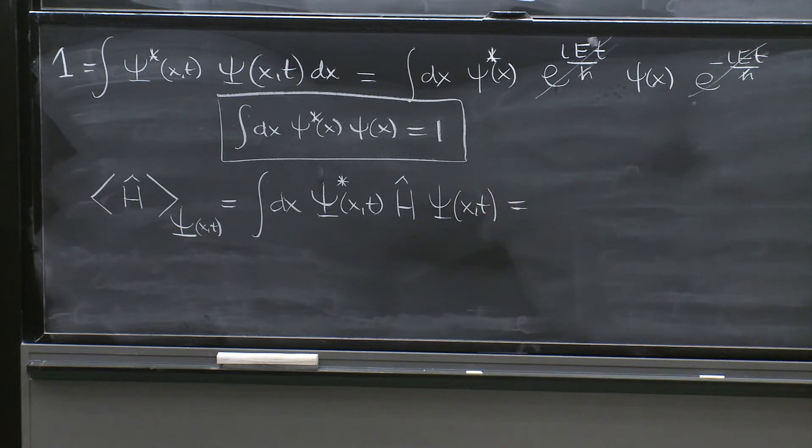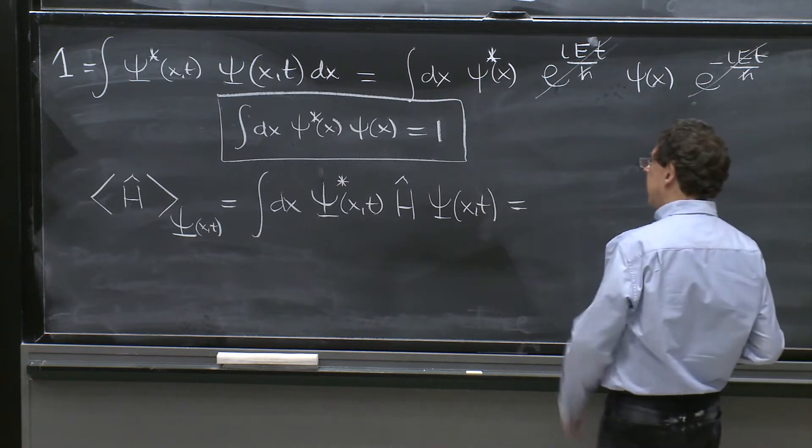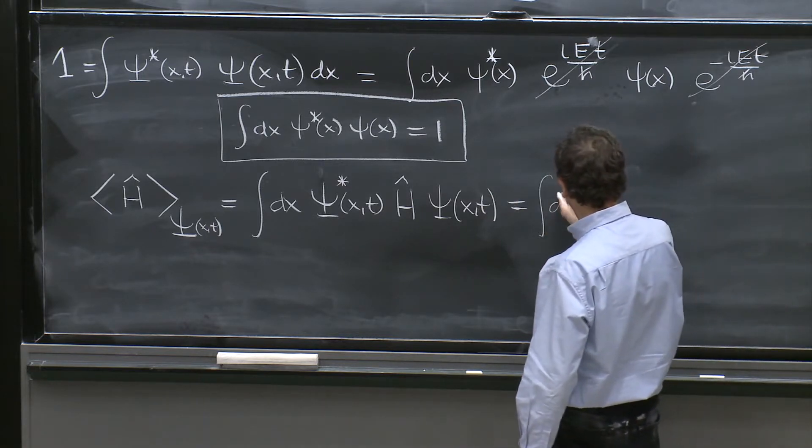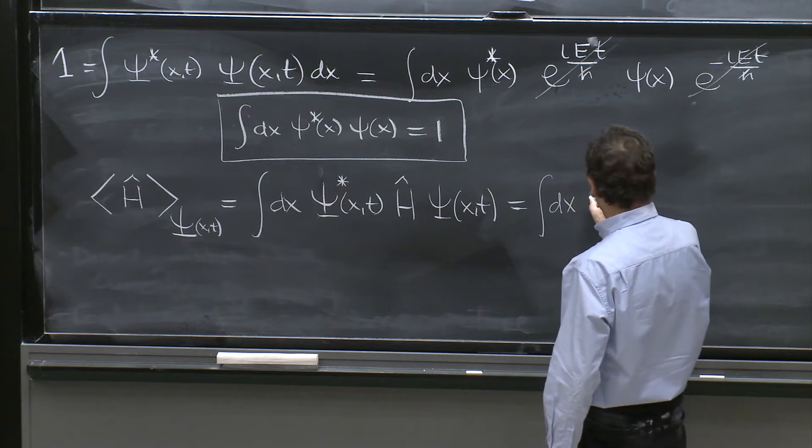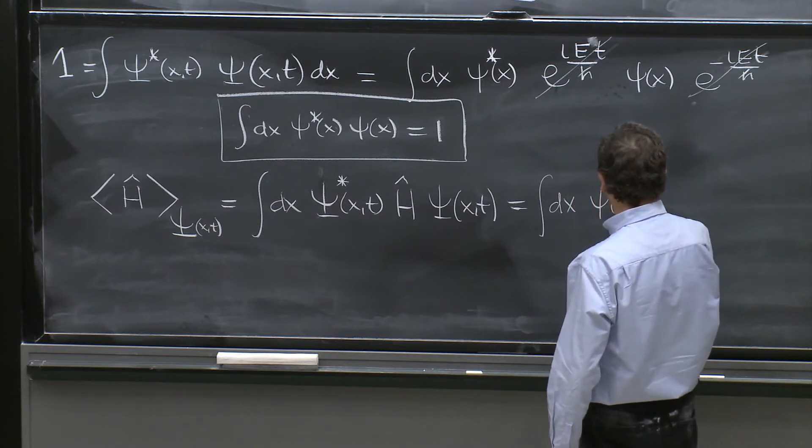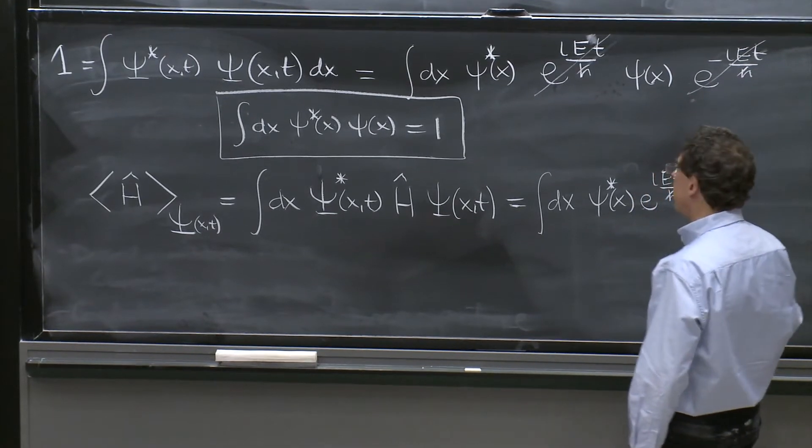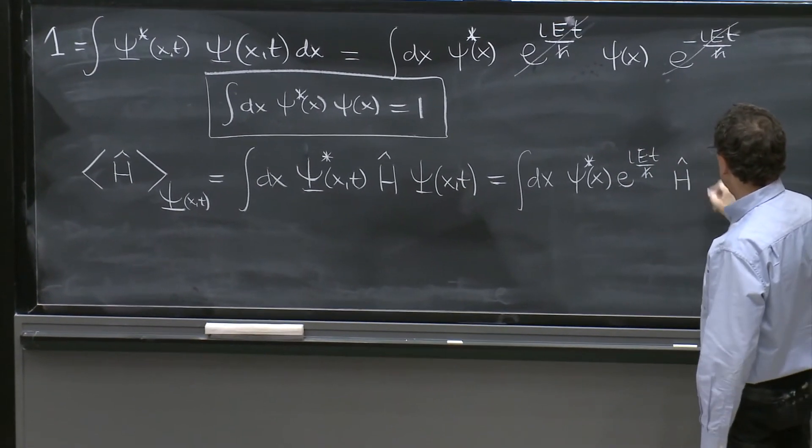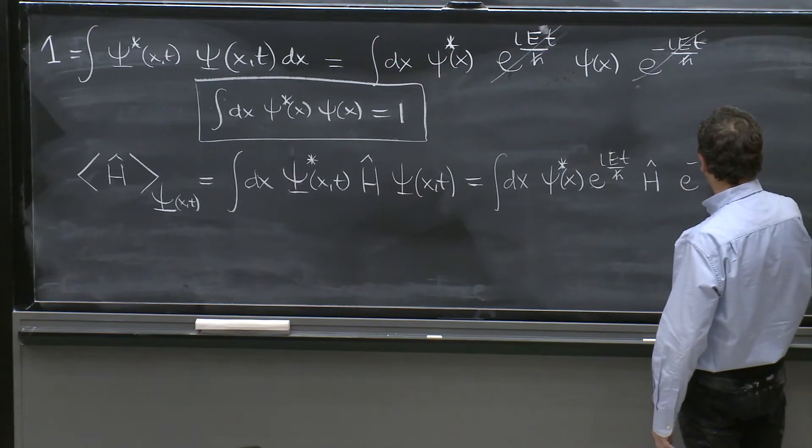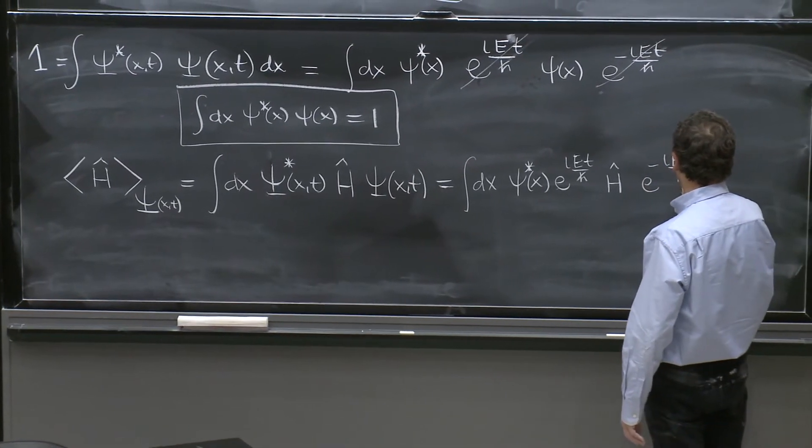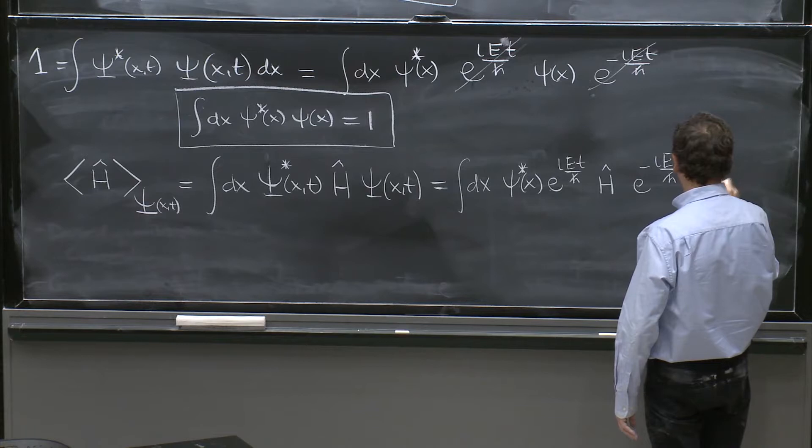And we're going to see this statement that we made a few minutes ago become clear. What do we get here? We get here dx psi star of x e to the i E t over h bar, H hat, e to the minus i E t over h bar psi of x.